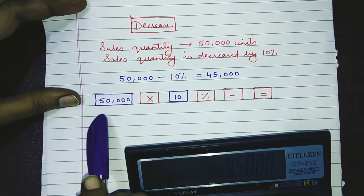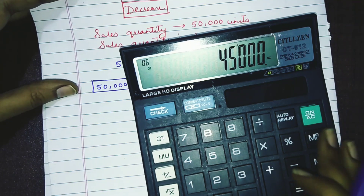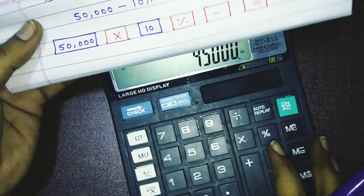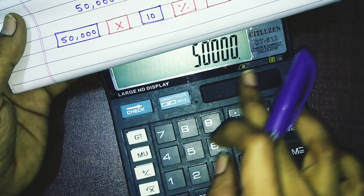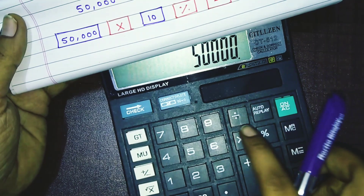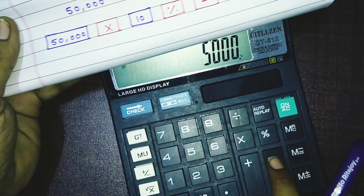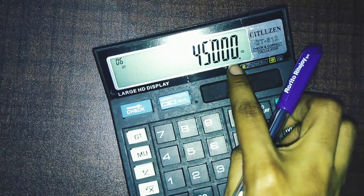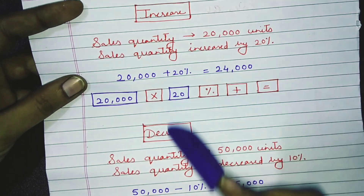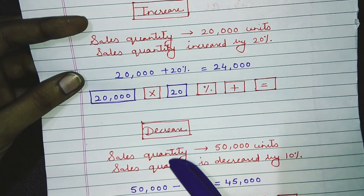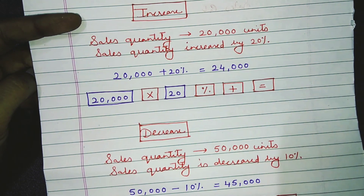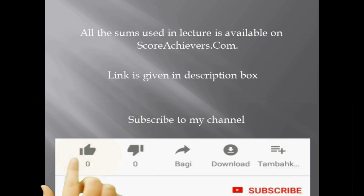I have written down the steps and I am going to show you how to do it on your calculator. First, press the amount. Then press the multiplication sign. Then press 10. Then press minus. Then press equals. You will get the amount of 45,000. With the help of these calculator tricks, your plus/minus increase and decrease calculations are very easy. I hope you have understood this. All the best for your examination — thank you so much.